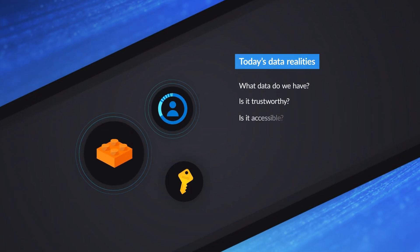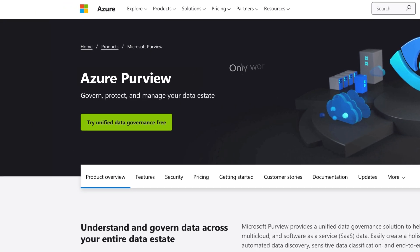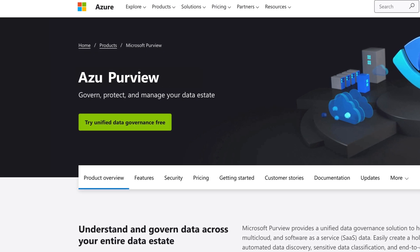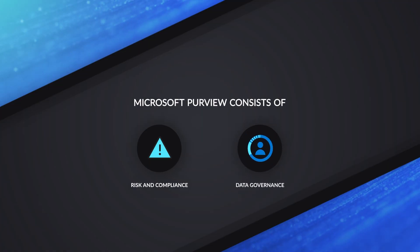We need to start with governance — tracing your data from beginning to end. A lot of presentations don't start with governance; they usually start with the data. The product we're talking about today is called Microsoft Purview. You'll notice that when you see something called 'Azure something,' it works in Azure. But if you see it called 'Microsoft something,' it works in Azure and on-prem. So there's a method to that naming madness. Purview has two big pieces: risk and compliance, and the suite of features for data governance — which is what we'll cover today.